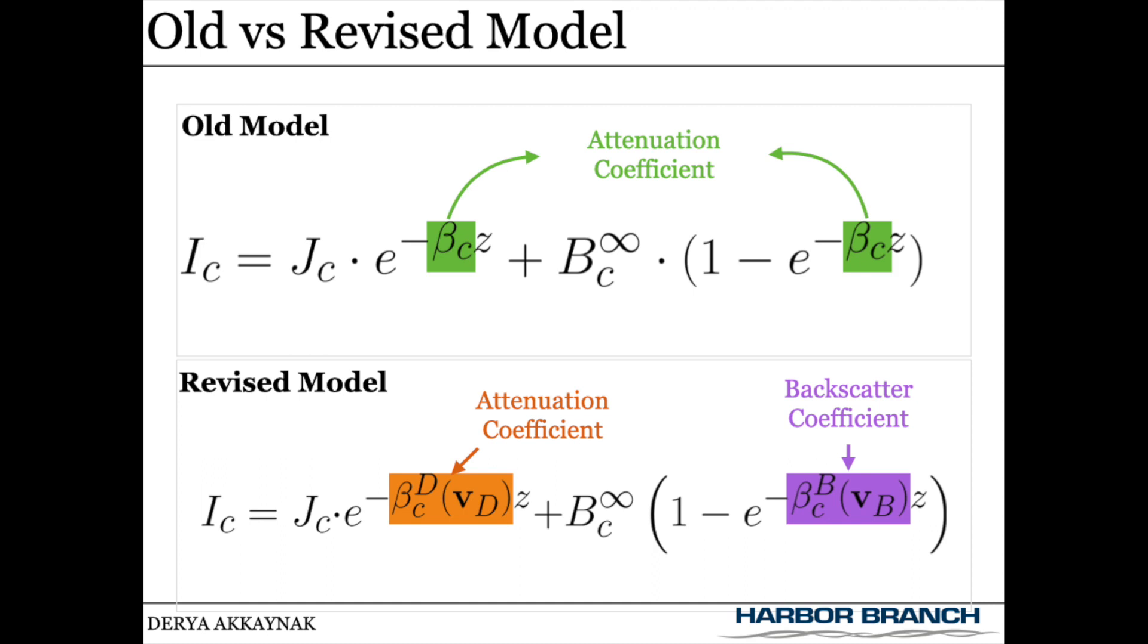In the revised model, they're different, and their dependencies on range, reflectance, ambient light, camera sensor, and water properties is explicitly shown.